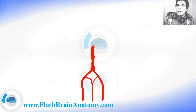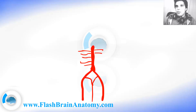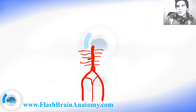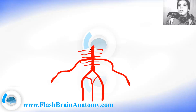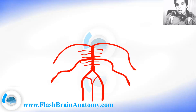Then the basilar artery here gives away smaller pontine arteries that supply the pons of the brain. And it also gives the anterior inferior cerebellar artery. It gives them on both sides. Then it gives the superior cerebellar arteries, and those arteries that I just mentioned supply the cerebellum with blood.